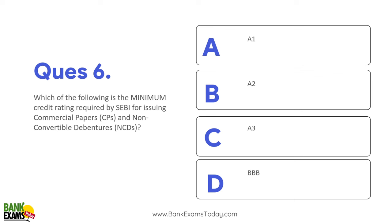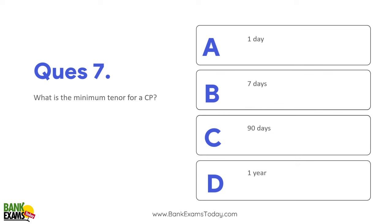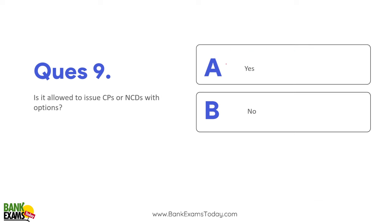Which of the following is the minimum credit rating required for issuing commercial papers and non-convertible debentures? CP aur NCD issue karne ke liye minimum A3 rating honi chahiye. Isse kharab rating hua toh aap issue hi nahi kar paoge. Minimum tenure kya hai commercial papers ka? Seven days ka minimum tenure hai CP aur NCD ka. Maximum tenure NCD aur CP ka hai one year - minimum seven days, maximum one year.